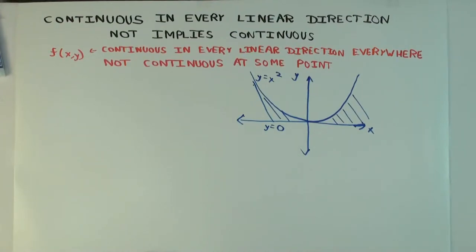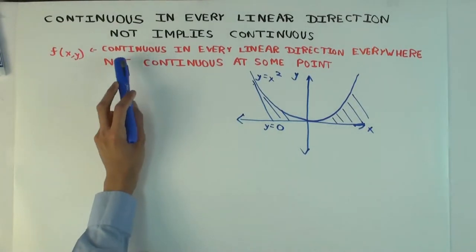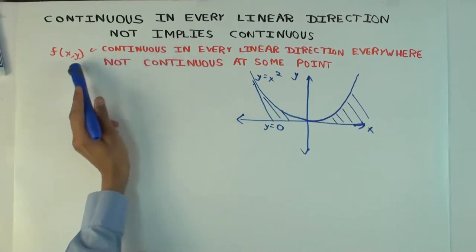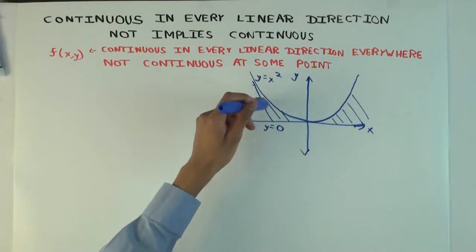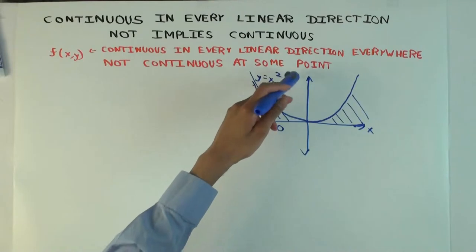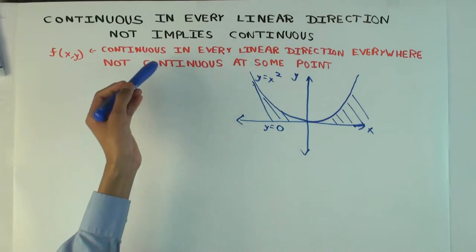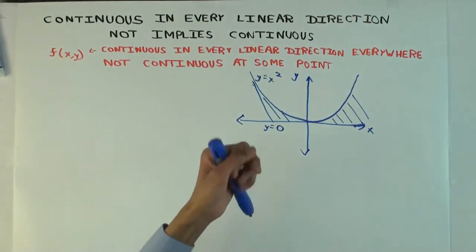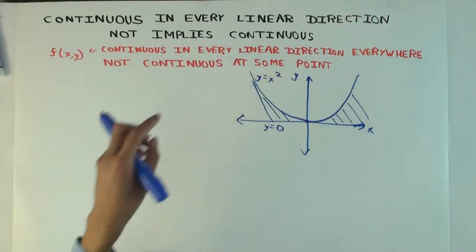In this talk, I'm going to consider an example of a function that's continuous in every linear direction at every point. What that means is: if you pick any point in the domain — which in this case is the entire xy-plane — it's continuous in every straight line direction through the point, and yet it's not continuous everywhere. There's one point where the function is actually not continuous as a function, even though at that point it's continuous in every linear direction.